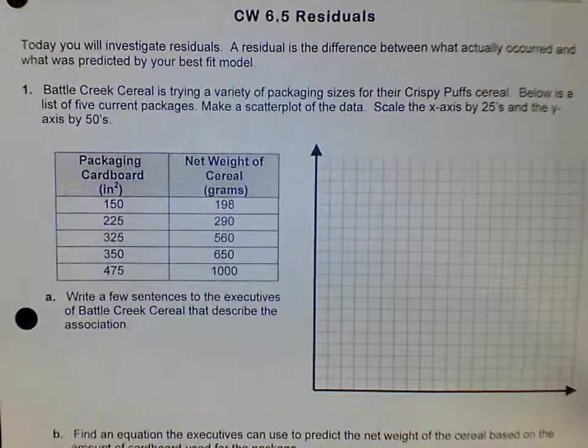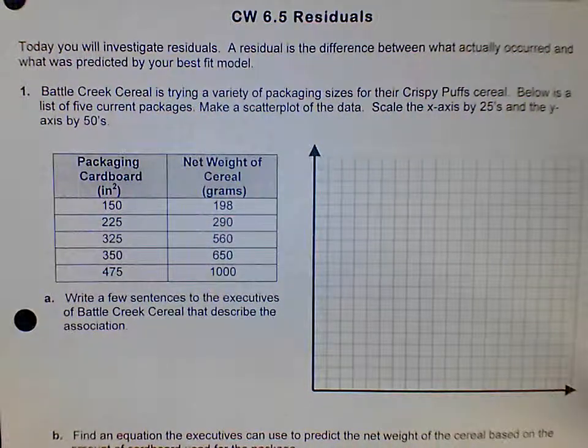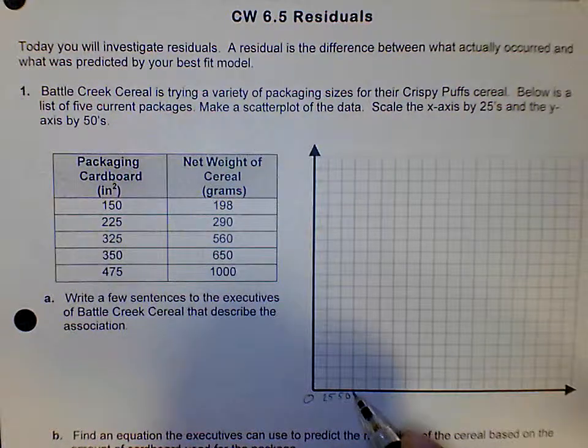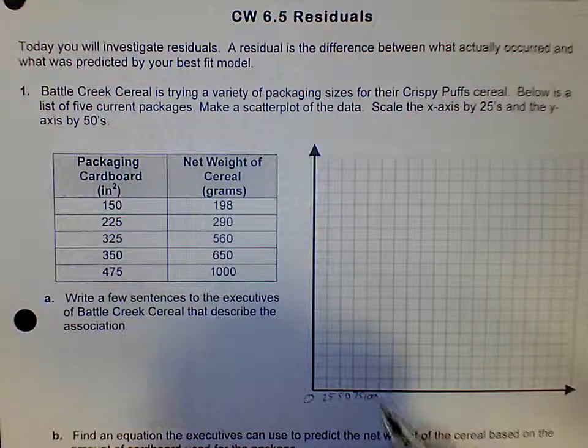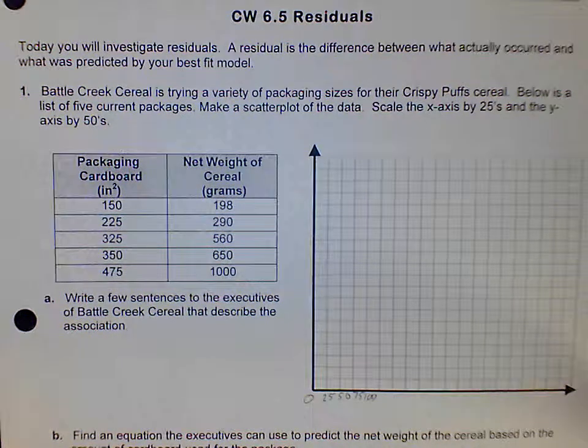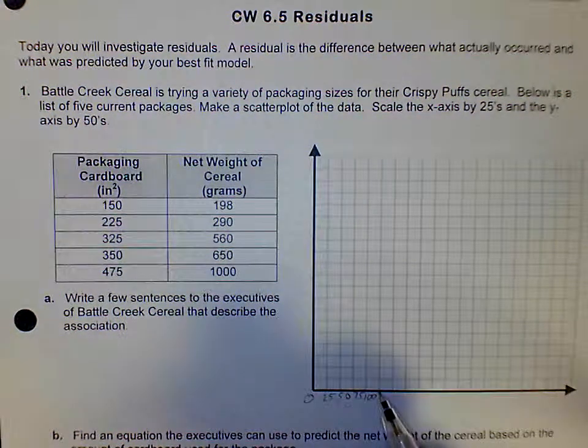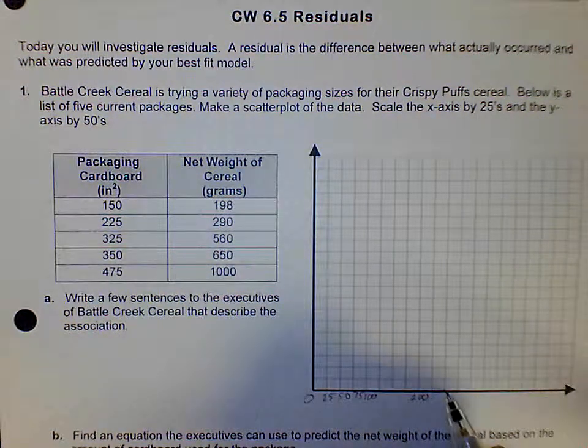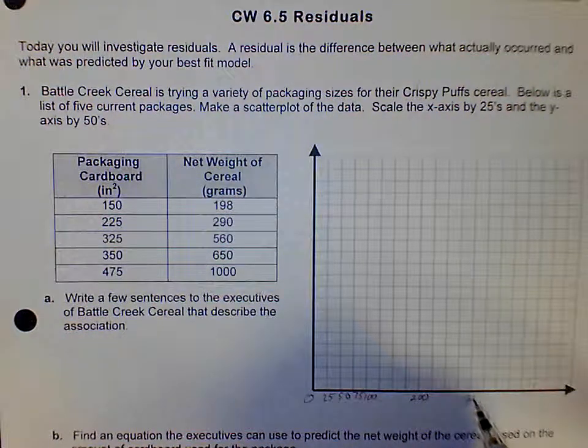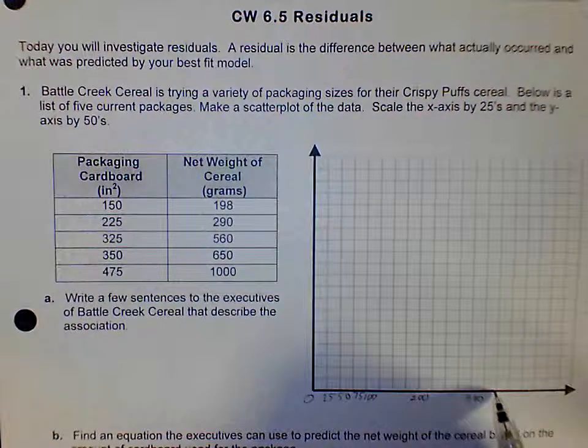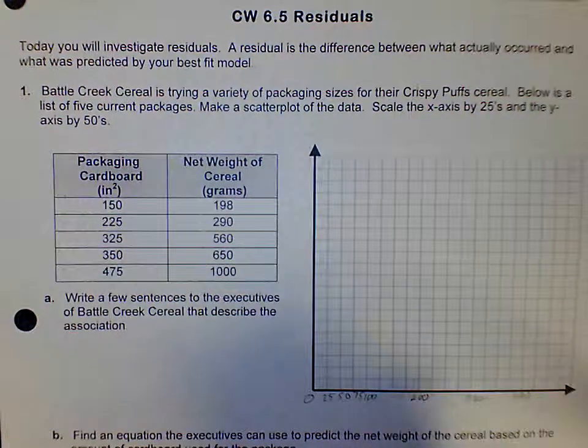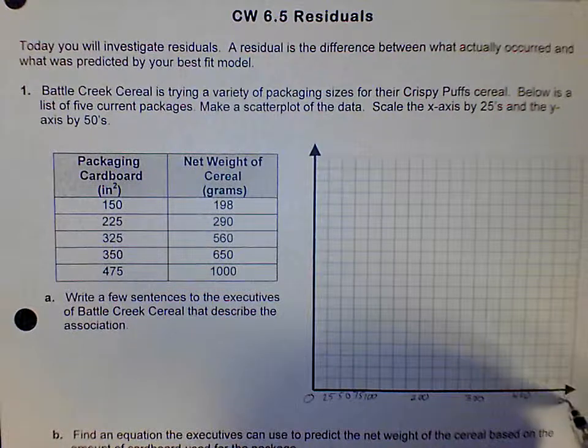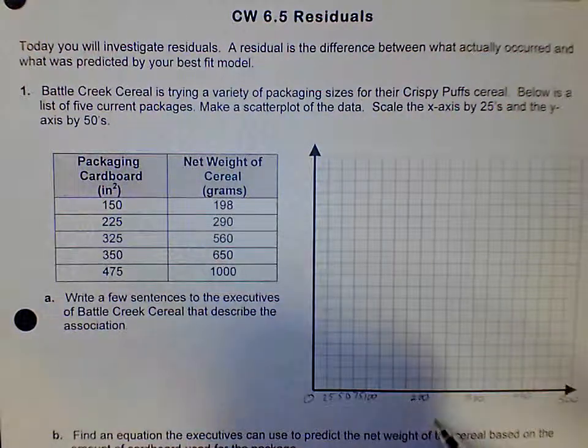Let me move this up a little bit. So we need to go by 25 on the x-axis: 0, 25, 50, 75, 100. Because it's very hard to see, I'm just going to write every hundred from now on. So 100, 125, 150, 175, 200, 225, 250, 275, 300, 325, 350, 375, 400, 425, 450, 475, 500. This is going to be packaging cardboard.